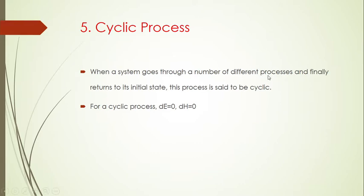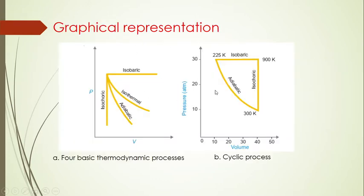A cyclic process is when a system goes through a number of different processes and finally returns to its initial state. For example, a system first goes through an adiabatic process, then an isothermal process, then an isobaric process, and returns to its initial point. For a cyclic process, change in energy is zero and dH equals zero.